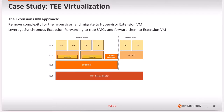A guest will issue an SMC through the kernel driver. The hypervisor will trap the SMC and issue a request to the TEE mediator, which will perform all tasks required for virtualization and then forward the SMC to the secure monitor, which will in turn dispatch it to the secure OS.